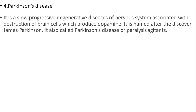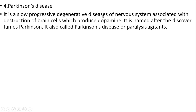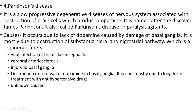The fourth question is Parkinson's disease. It is a slow, progressive, degenerative nervous system disorder associated with the destruction of brain cells which produce dopamine. It is named after James Parkinson and is also called paralysis agitans. Causes: it occurs due to lack of dopamine caused by damage of the basal ganglia, mostly due to destruction of the substantia nigra and nigrostriatal pathway (dopaminergic fibers). Other causes include viral infections of the brain like encephalitis, cerebral arteriosclerosis, injury to the basal ganglia, destruction or removal of dopamine in the basal ganglia, and long-term treatment with certain antihypertensive drugs.